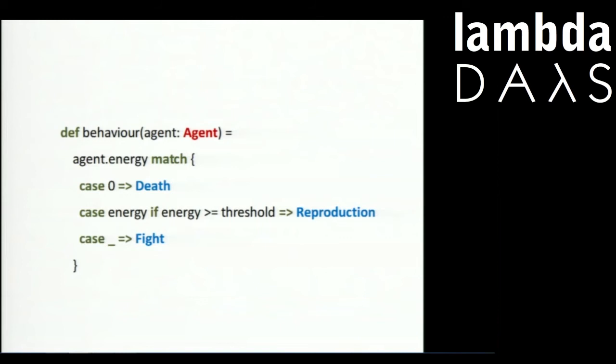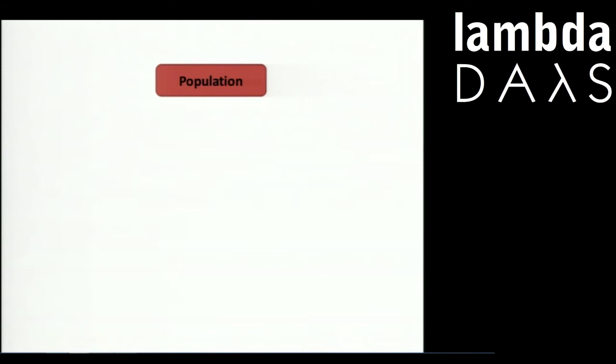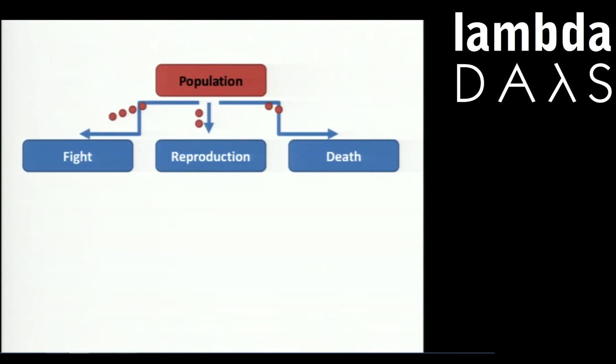So the first MapReduce step is as follows: we have some agents and we define some behaviors, then we simply map agents to behaviors and group them by those behaviors.